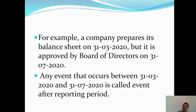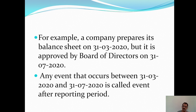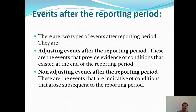Any event that occurs between 31st March 2020 and 31st July 2020 is called an Event After the Reporting Period — any event that occurs in April, May, June, or July. There are two types of events after the reporting period. The first one is Adjusting Events After the Reporting Period.